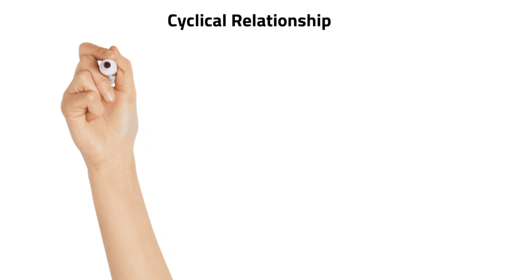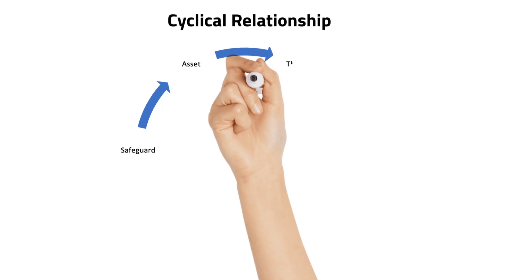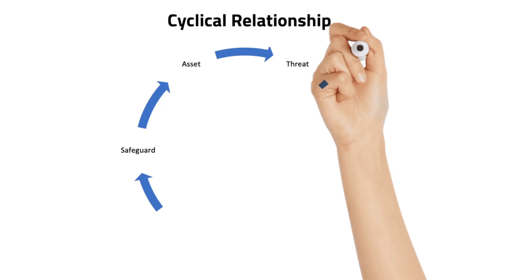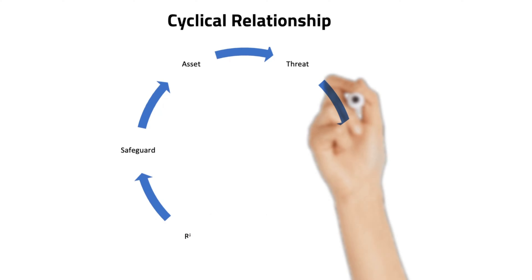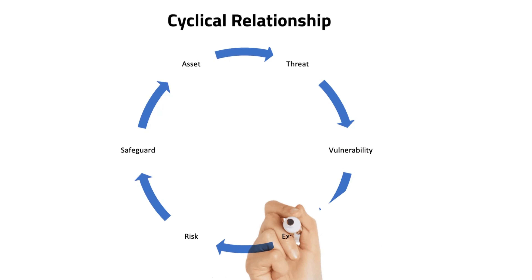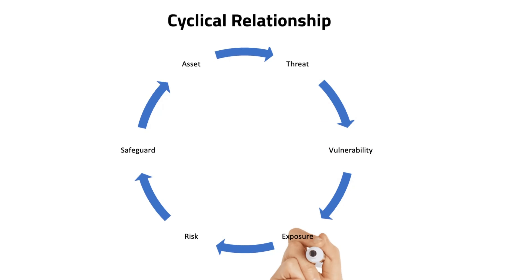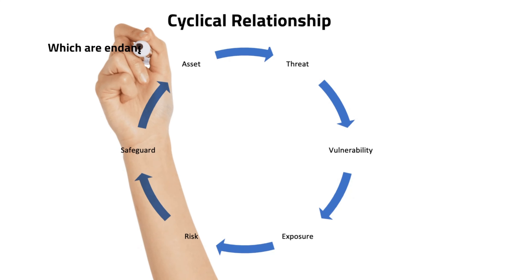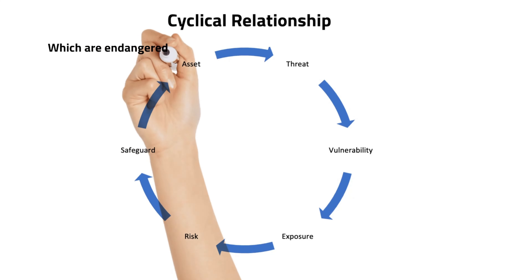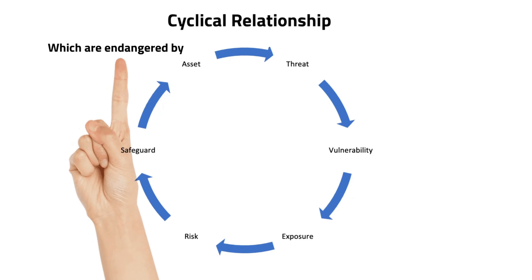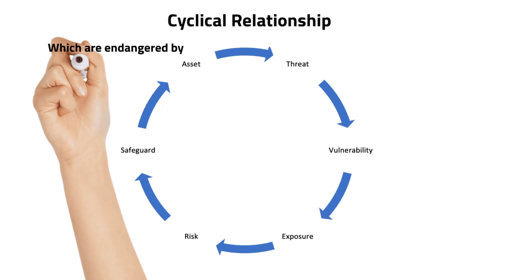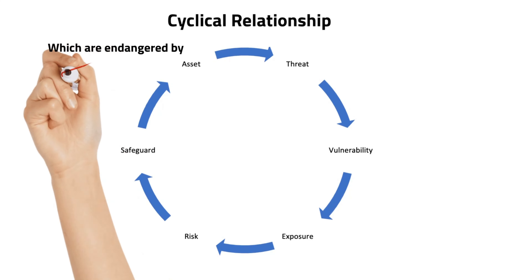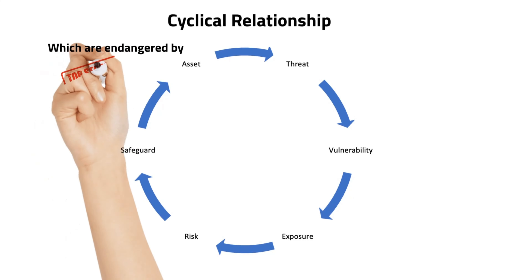What is an asset? It's nothing but anything used in your business. What is a threat? Any potential occurrence that may cause an undesirable or unwanted outcome for an organization. It can be intentional or unintentional, and can originate from inside or outside. Loosely, think of a threat as a weapon that could cause harm to a target.